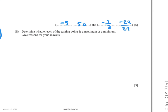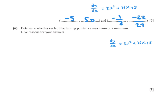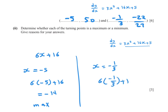Determine whether each turning point is a maximum or minimum. The second derivative is 6x plus 16. At x equals negative 5: 6 times negative 5 plus 16 equals negative 14, which is negative, so this is a maximum point. At x equals negative 1/3: 6 times negative 1/3 plus 16 equals positive, so this is a minimum point.